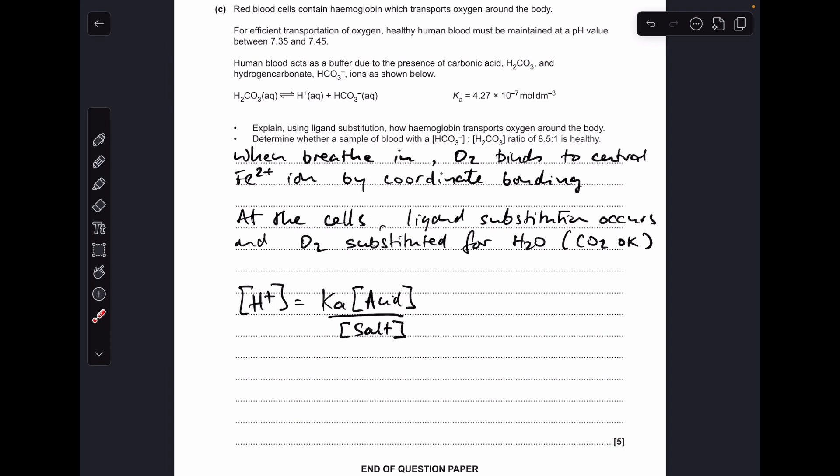Now they haven't given us the concentrations, they've given us the concentration ratio. So the HCO₃⁻ ion is the salt, so it's 8.5 for the salt, and the acid is obviously this carbonic acid here, H₂CO₃, so that's 1 in the ratio.